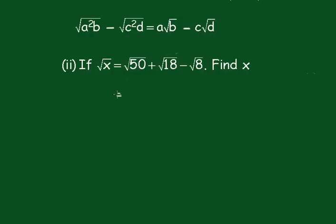So this becomes, that's the square root of, now 50 is 25 times 2, plus, now that's the square root of 9 times 2, minus, and this is the square root of 4 times 2.